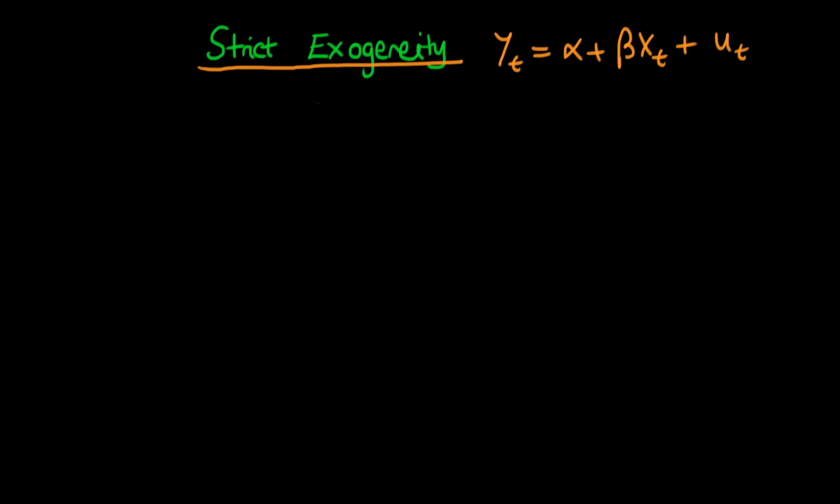The strict exogeneity assumption is that the expectation of this error term ut given the values of xt in all other periods has to equal zero. This has to hold not just for the period where s equals t, but for all values of s, where this sign means 'for all'.